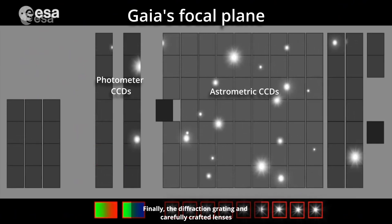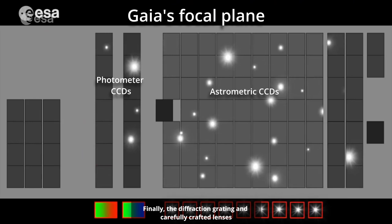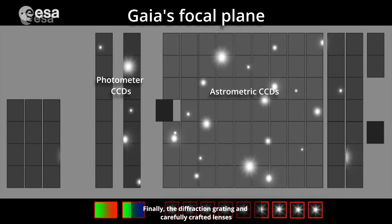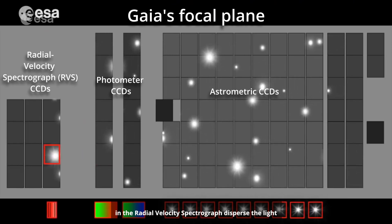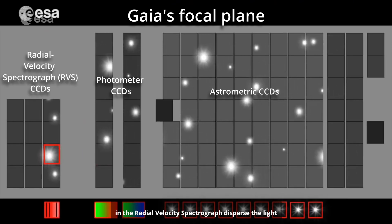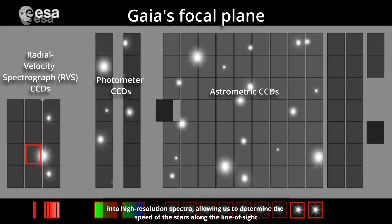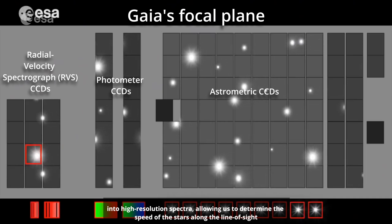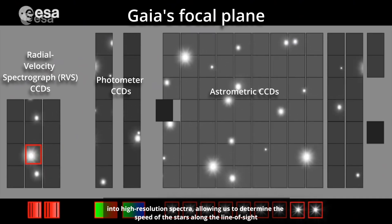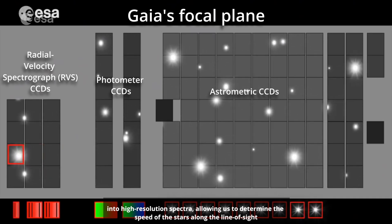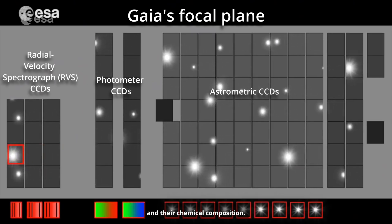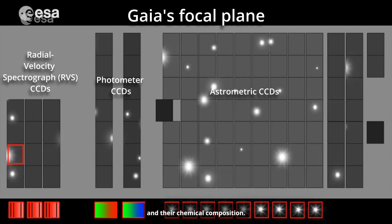Finally, the diffraction grating and carefully crafted lenses in the radial velocity spectrograph disperse the light into high-resolution spectra, allowing us to determine the speed of the stars along the line of sight, and their chemical composition.